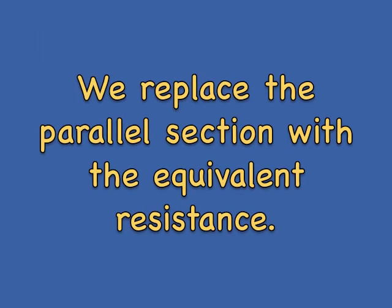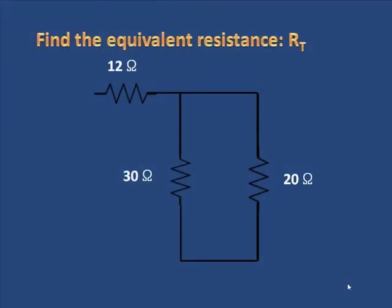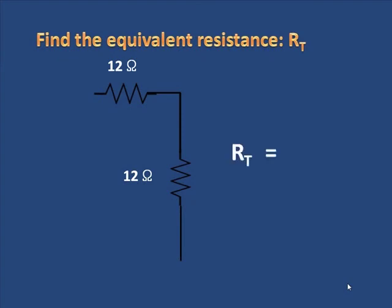So now we will replace those two resistors with the one, and we are almost finished our question. We now have two resistors in series. All we have to do is add them up, and we found our equivalent resistance for all of those resistors, 24 ohms.